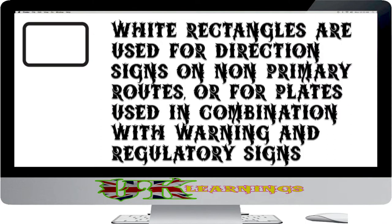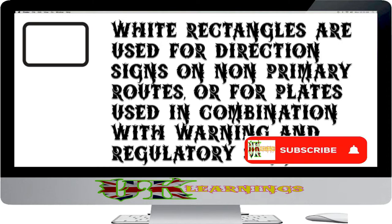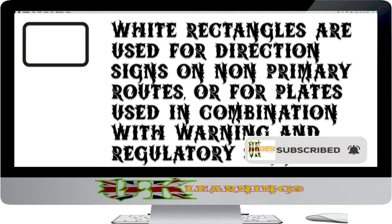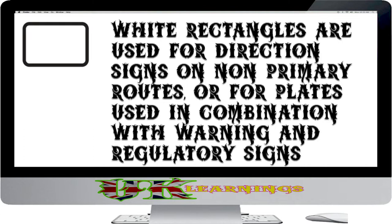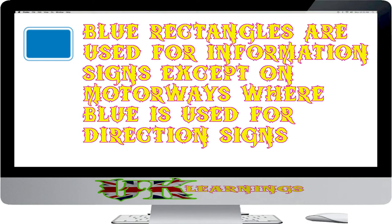White rectangles are used for direction signs on non-primary routes, or for plates used in combination with warning and regulatory signs. Blue rectangles are used for information signs, except on motorways where blue is used for direction signs.